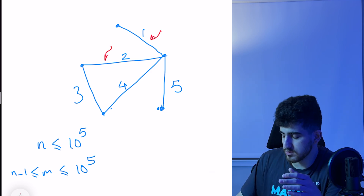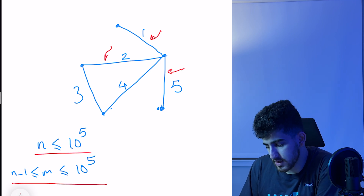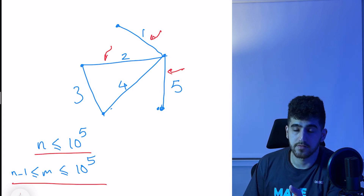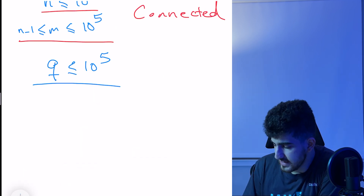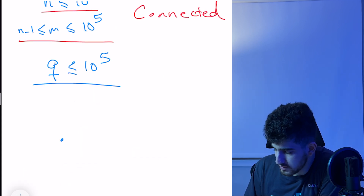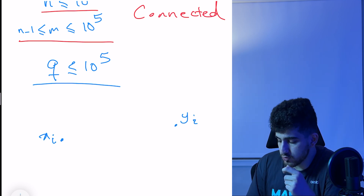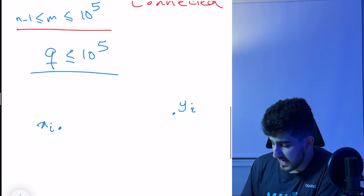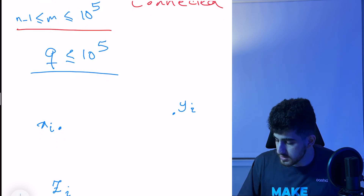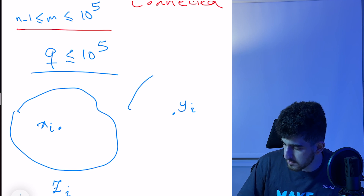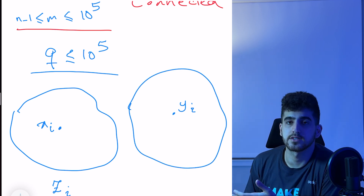The number of vertices N is up to 10^5, and M, the number of edges, is also up to 10^5. The graph is connected. This problem gives you Q queries, and each query gives you two vertices X_i and Y_i. Two brothers live at these two vertices and they want to visit at least Z_i vertices in total.